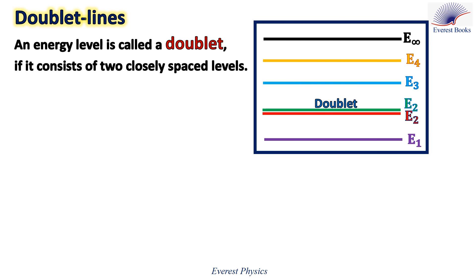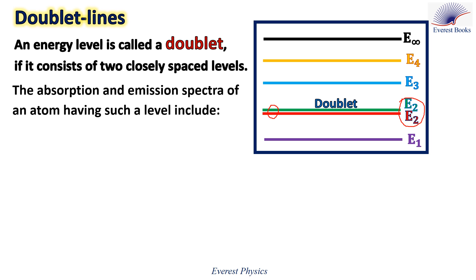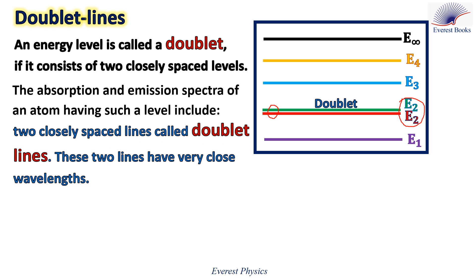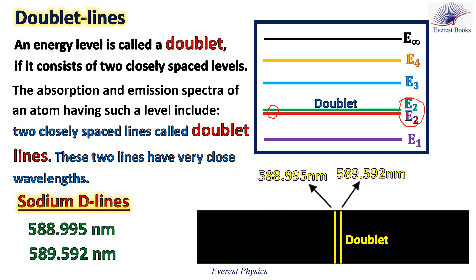An energy level is called a doublet if it consists of two closely spaced levels. Observe this figure — we have two energy levels very close to each other, so E2 is called a doublet. The absorption and emission spectrum of an atom having such a level include two closely spaced lines called doublet lines. These two lines have very close wavelengths. For example, the sodium emission spectrum is dominated by the bright doublet known as the sodium D lines, whose two wavelengths are very close to each other.